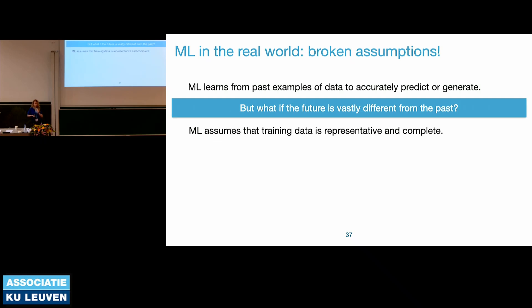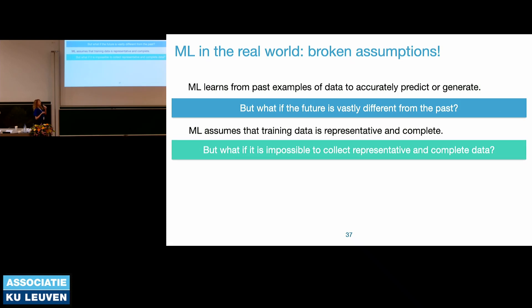The second base assumption is that training data is representative and complete. Again, that is very often not the case. In research articles you'll see disclaimers assuming representativeness, but we don't know. It's much easier to collect a representative dataset of natural images, and even those can be not entirely representative. When talking about security-specific data, it's not even human-interpretable, so ensuring its representativeness is really hard. It is often impossible to collect representative and complete data, and this needs to be taken into account when building the system.